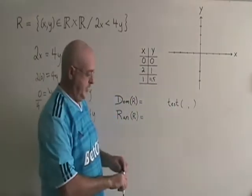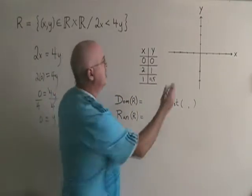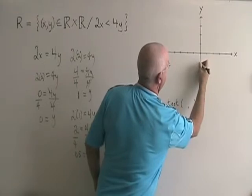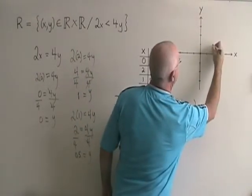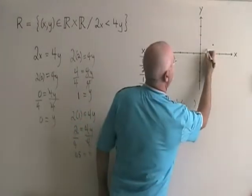Now I can graph my line. 0, 0 is the origin. 2, 1 will be here, and 1, 0.5 will be here.